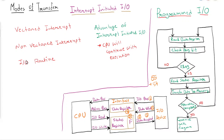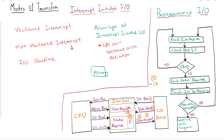The CPU responds to the interrupt signal by storing the return address — it stores its current content into a memory location and then starts executing the interrupt service routine. The way the processor chooses the branch address of the service routine can be categorized into two types. Once the interrupt is received, the CPU stores everything into memory and then manages the interrupt.